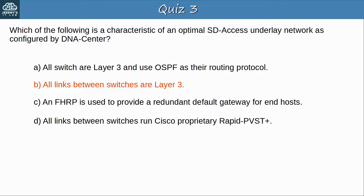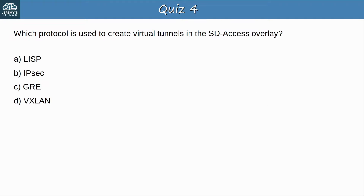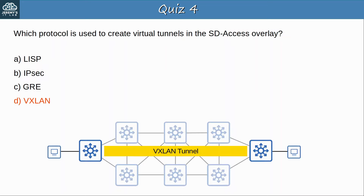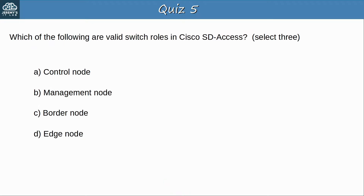Quiz question 4: Which protocol is used to create virtual tunnels in the SD Access overlay? The answer is D, VXLAN. It is used to create virtual tunnels in the overlay network. The extensible in virtual extensible LAN is very important — it means that VXLAN supports many different features which are used by SD Access. Quiz question 5: Which of the following are valid switch roles in Cisco SD Access? Select 3. The answers are A, C, and D — control, border, and edge nodes. These are the three different switch roles in Cisco SD Access, and there is no such thing as a management node.